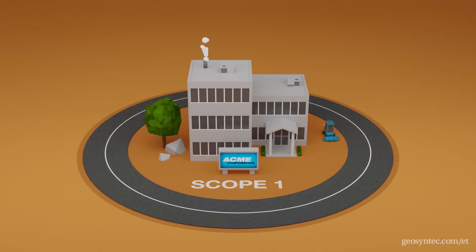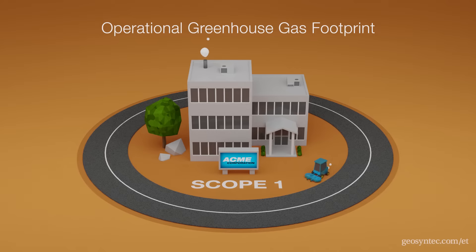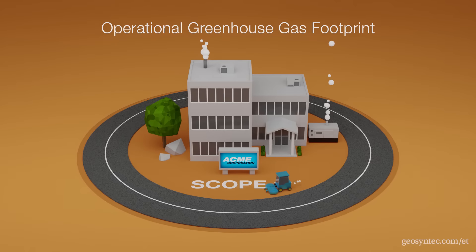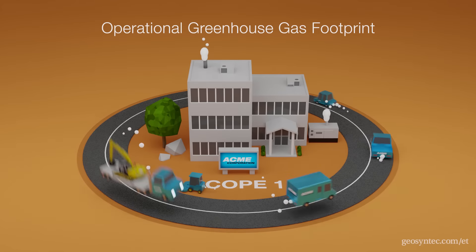The term Scope 1 greenhouse gas emissions refers to heat trapping gases generated during operations at a site. This includes gases from diesel and gasoline used for running equipment and generating power, for running stationary equipment like diesel generators, and for powering vehicles and mobile equipment.